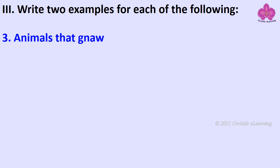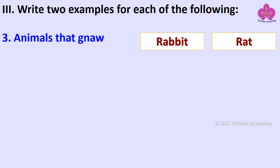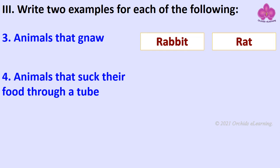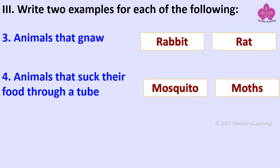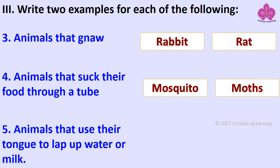Animals that gnaw: Rabbit, Rat. Animals that suck their food through a tube: Cat, Dog.